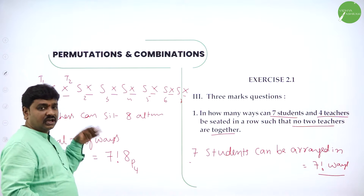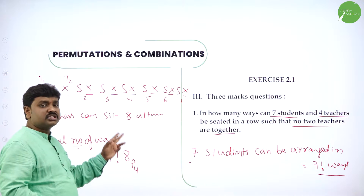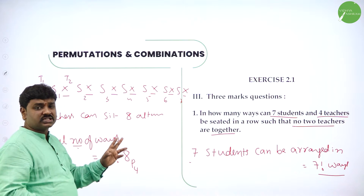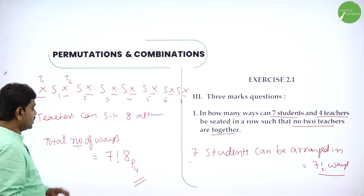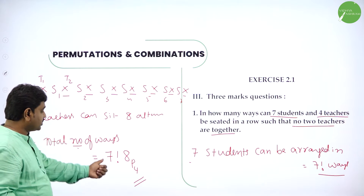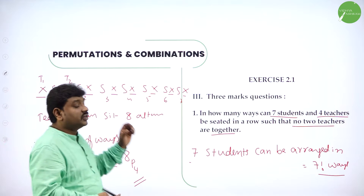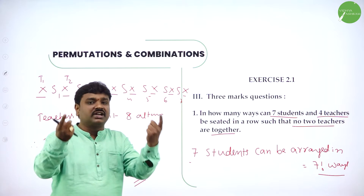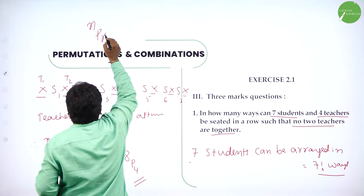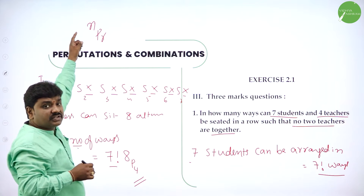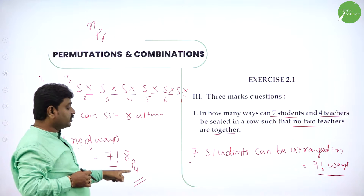So 7 factorial into 8P4 is the answer. You can leave it here or simplify: 7 factorial is 7×6×5×4×3×2×1, and 8P4 means 8×7×6×5 — 4 terms. For 7 students, no restriction, arrange in 7 factorial. For 4 teachers, they should occupy alternate places. In 8 alternate places, place 4 teachers in 8P4 ways: n things in n places is NPR. So 4 teachers in 8 places is 8P4 ways. Answer: 7 factorial into 8P4.